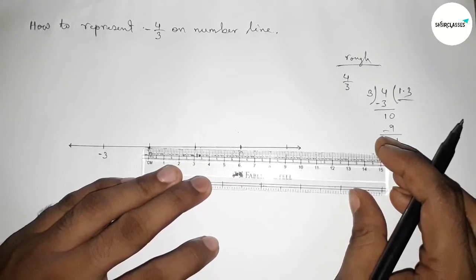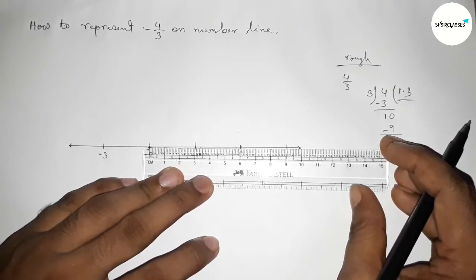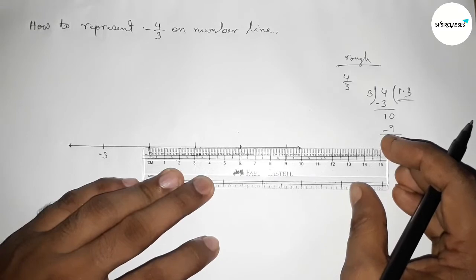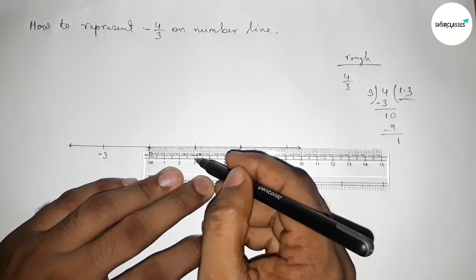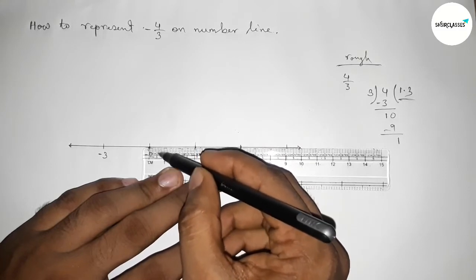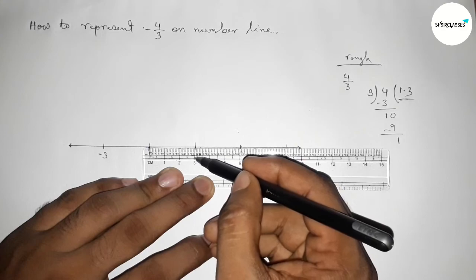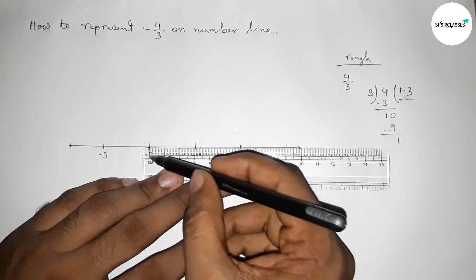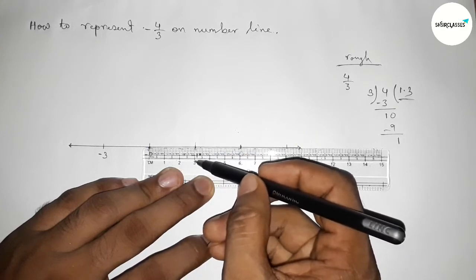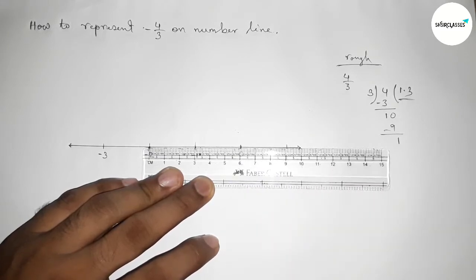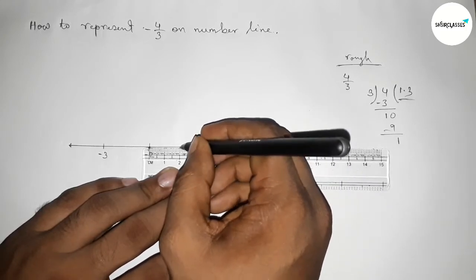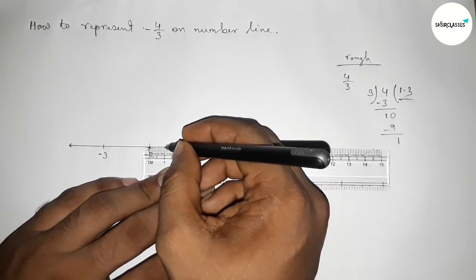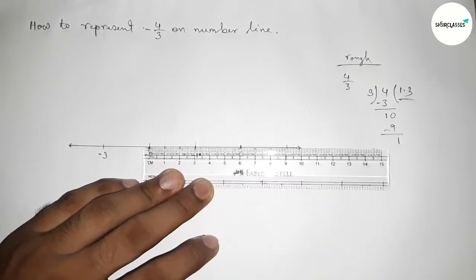Now I'm going to use a scale to divide the distance between minus one and minus two into three equal parts. The total length between minus one and minus two is divided into 30 equal parts on the scale. Dividing 30 by three, one third equals 10 and two thirds equals 20. So one third is at 10 and two thirds is at 20.